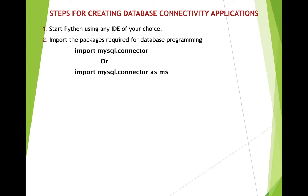Just as we import the math module to use math functions, for database connectivity we need to import the necessary package. The necessary package here is mysql.connector. You write: import mysql.connector. Alternatively, you can write: import mysql.connector as ms. The 'as' keyword is used for renaming packages — so from now on, whenever I use 'ms', Python knows I mean mysql.connector, reducing programming effort.